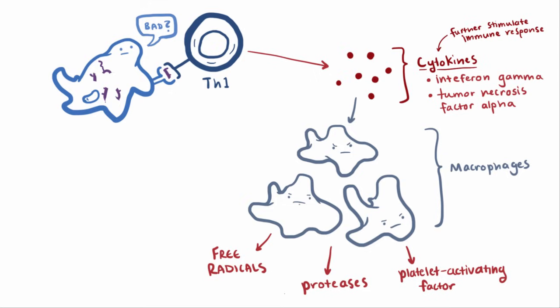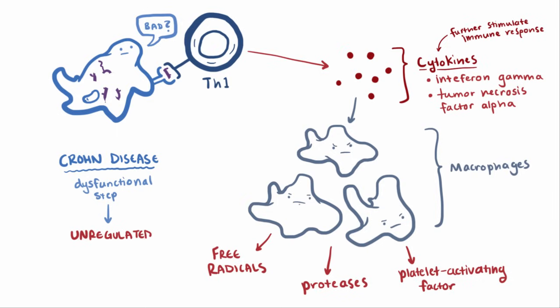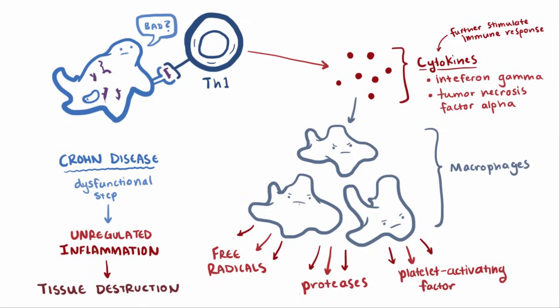Although not definitively understood, it's thought that for patients with Crohn disease, one of the steps in this process is dysfunctional, and leads to an unregulated and out-of-control inflammatory response. Unregulated inflammation means lots of proteases, platelet-activating factor, and free radicals floating around the gastrointestinal tissue, which ultimately causes destruction of healthy tissue.